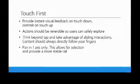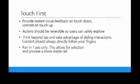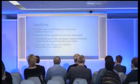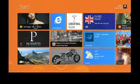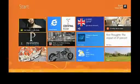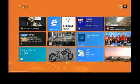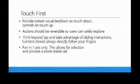Touch first — this has been hit on quite a bit today, but remember where your users are and what context they're in. Mouse and keyboard are going to be very important, but make sure you are designing for touch first. Provide instant visual feedback when they're touching — on a touchdown, commit on a touch up. For example, notice that when you hold it, it bends away from you and lets you know you've touched it. When you let go, that's when it brings the app back up. That's what we mean by instant visual feedback and commit on touch up.